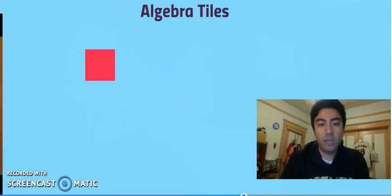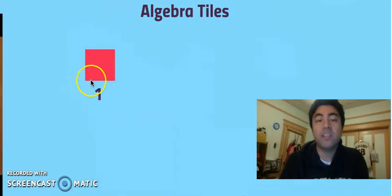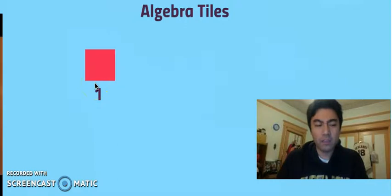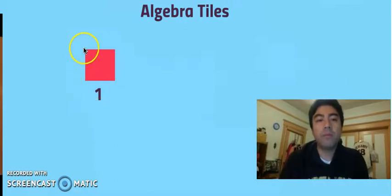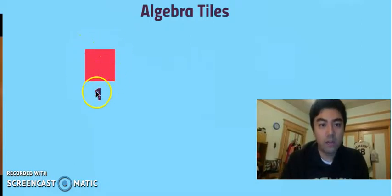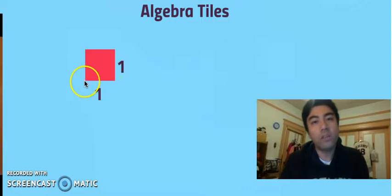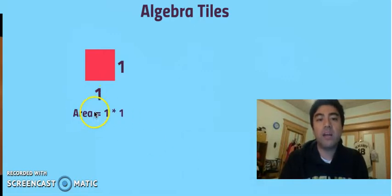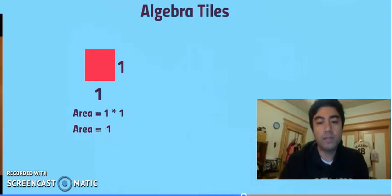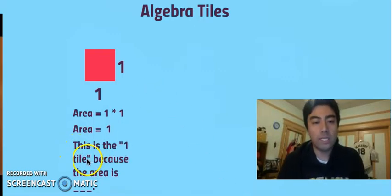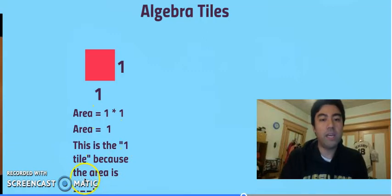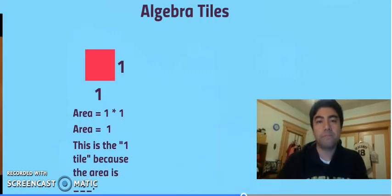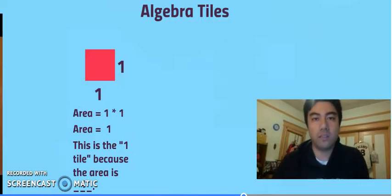This first algebra tile is in the shape of a square. This length is one, and since all sides of a square are equal, this width is also one — both the base and the height are one. That means the area is one times one, which equals one. So we call this the one tile, because the area of this square is just one.